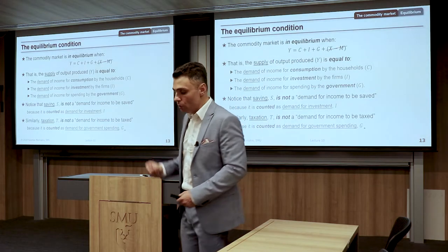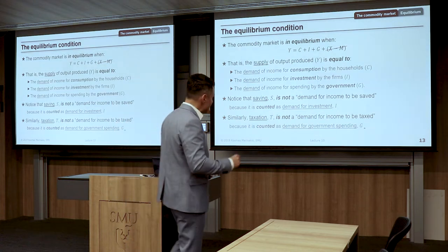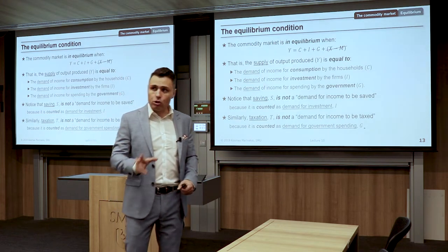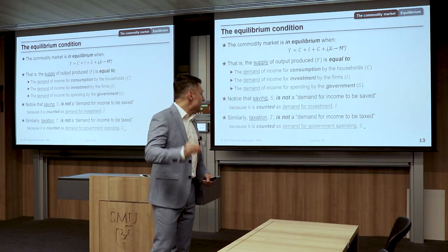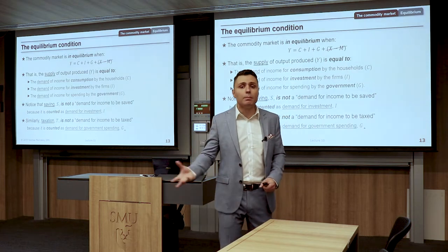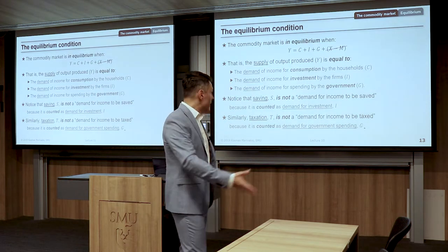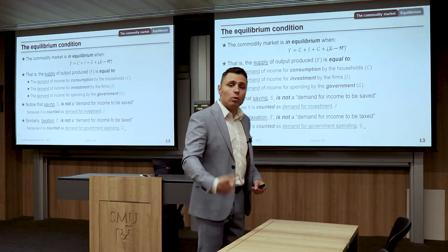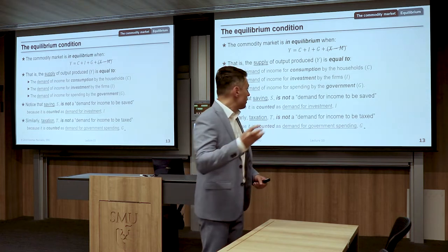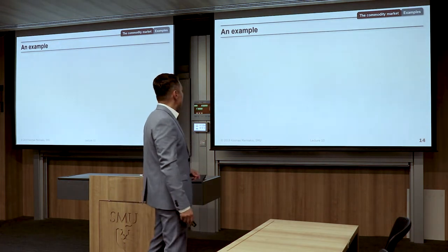An important note: this equilibrium condition is just a condition — it doesn't have to necessarily hold true. If it holds true, the economy is in equilibrium. If it doesn't, the economy is in disequilibrium. The condition tells us: check your economy; if Y equals C plus I plus G, your economy is in equilibrium.